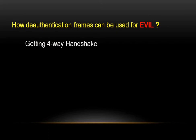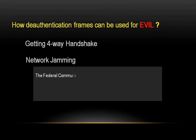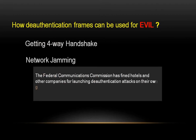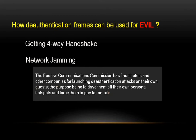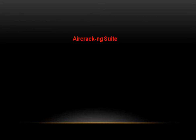If you don't know how to capture the handshake, please click on the card shown in the upper right side of the video. This is a type of denial-of-service attack, so it can be used for jamming the network. The Federal Communications Commission has fined hotels and other companies for launching de-authentication attacks on their own guests, the purpose being to drive them off their personal hotspots and force them to pay for on-site Wi-Fi services. Tools like Aircrack and MDK3 can be used for performing this type of attack.